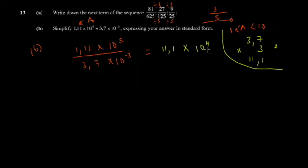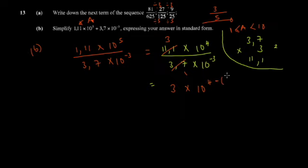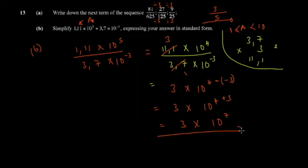When this becomes 11.1, decrease the exponent by 1, so 10⁴. I multiplied by 10 to get from 1.11 to 11.1, so it's 11.1 × 10⁴ ÷ (3.7 × 10⁻³). Since I verified 11.1 ÷ 3.7 = 3, you get 3 × 10⁴. Divided by means there's a negative, so 10⁴ minus negative 3, which is 10⁴⁺³ = 10⁷. Your answer is 3 × 10⁷.